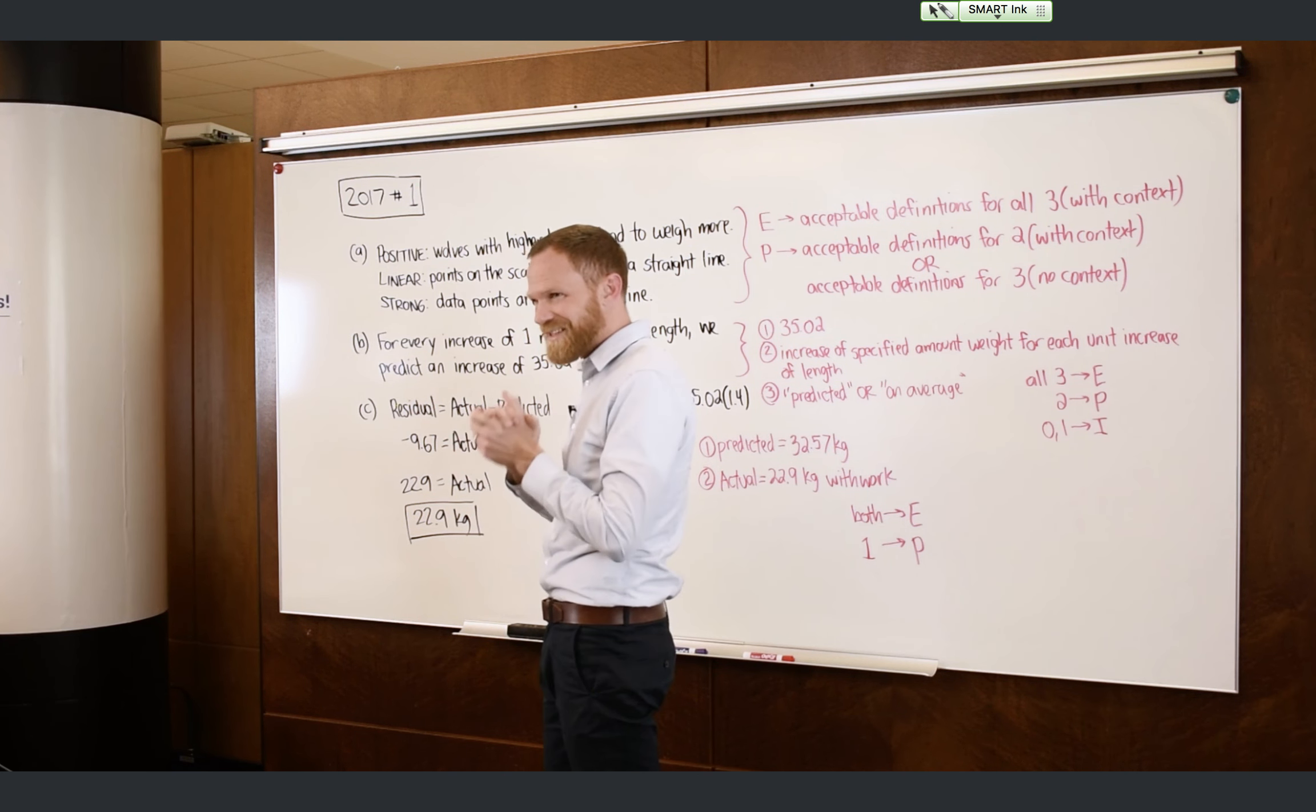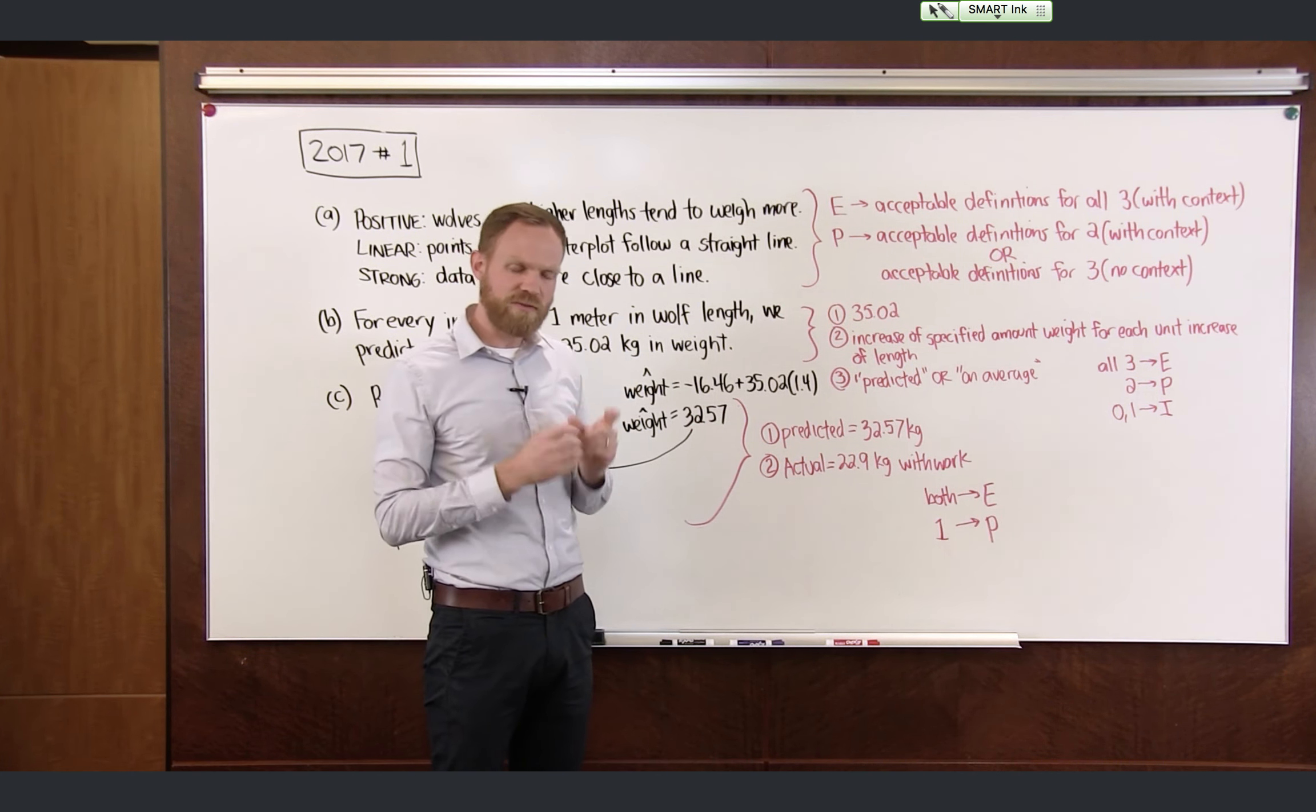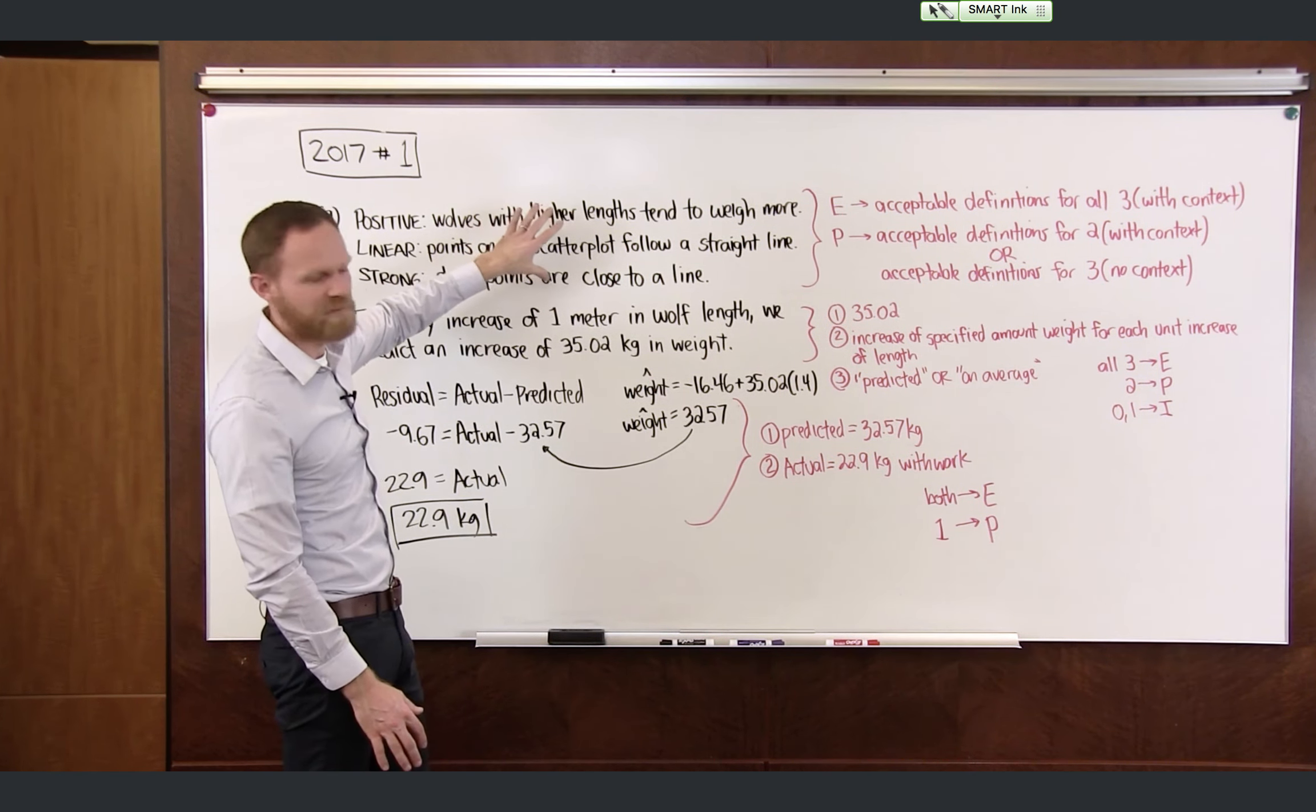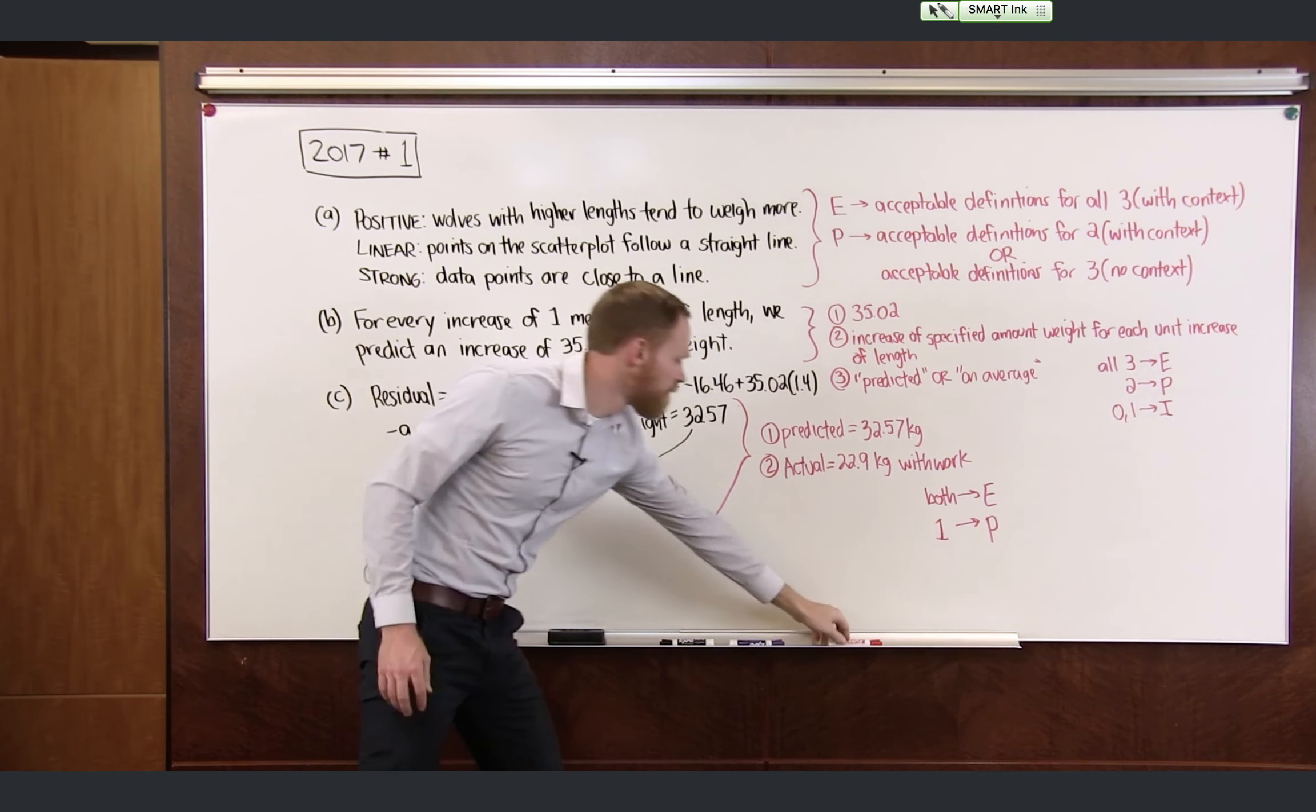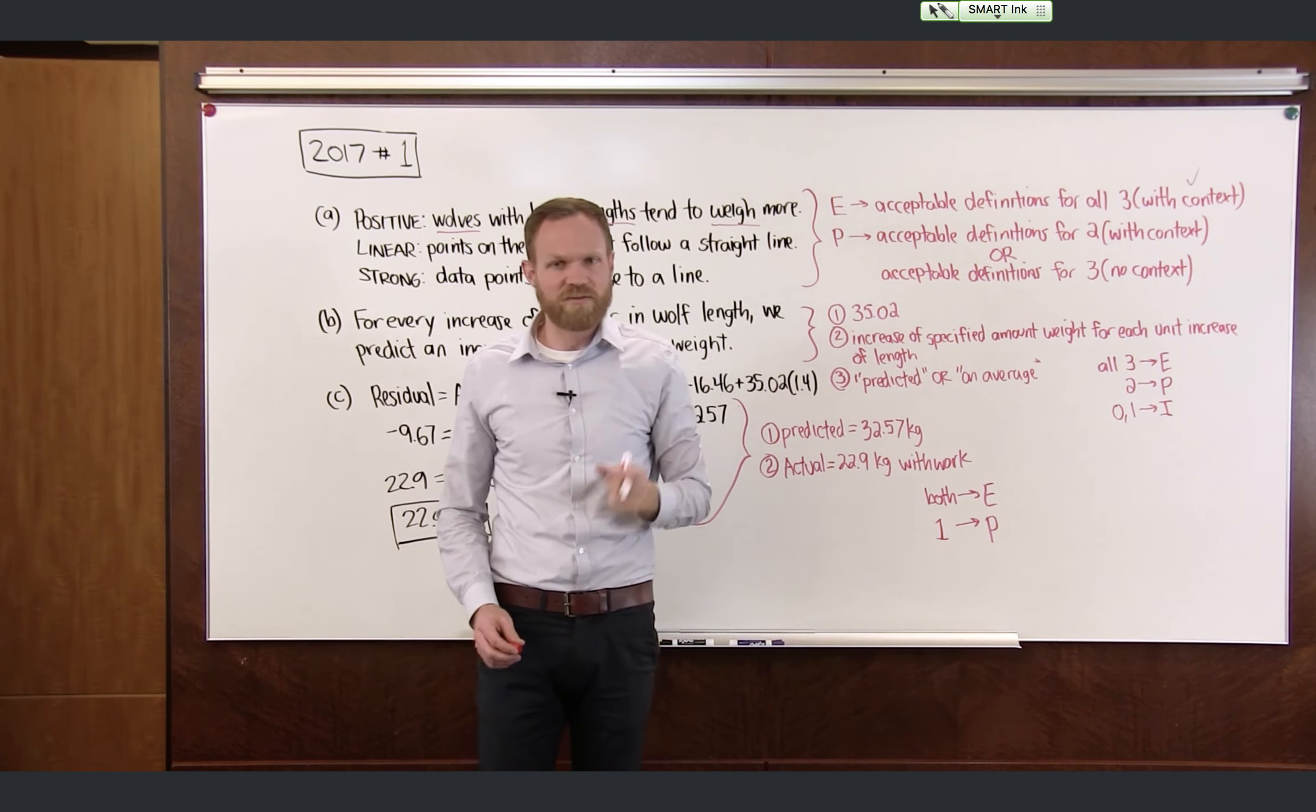Now that takes us through the model solution, but let's take a look now at the rubric to see what would be required for full credit on this one. Now the way that this one is graded is there are three different parts. And in each of the three parts, you're going to give yourself a grade of E for essentially correct, P for partially correct, or I for incorrect. The first part is all of Part A. And the way that they've defined it for full credit in order to get essentially correct, you have to have acceptable definitions for all three, and then you also have to have context. Well, context is easy. We established that right away here when we said wolves and lengths and weight. So we know we've taken care of the context. Now, as far as acceptable definitions, I'm going to run through a list of acceptable definitions and unacceptable definitions for each of the three ideas.